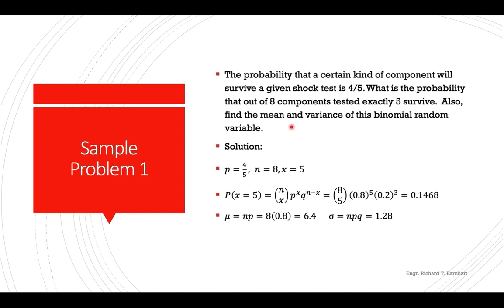Okay, so let's have an example. The probability that a certain kind of component will survive a given shock test is four over five, so this will be your p, the probability of success. What is the probability that out of eight components tested, exactly five survive? Also, find the mean and variance of the binomial distribution. So note that your random variable should conform with the probability of success. The probability of success counts the number of those components who survived the test.